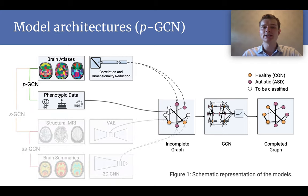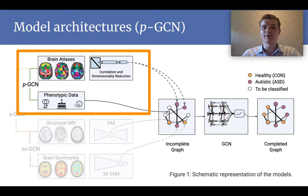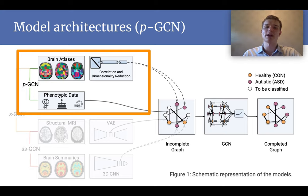This is a PGCN. It consists of two parts. The left-hand side prepares the data, and the right-hand side actually learns. This is a GCN. Here we have high-dimensional fMRI brain scans, and to overcome this high dimensionality, the voxels are grouped into areas designed by experts. In the top-left corner, three of these so-called atlases are illustrated.